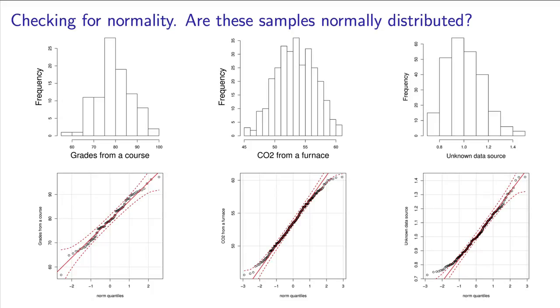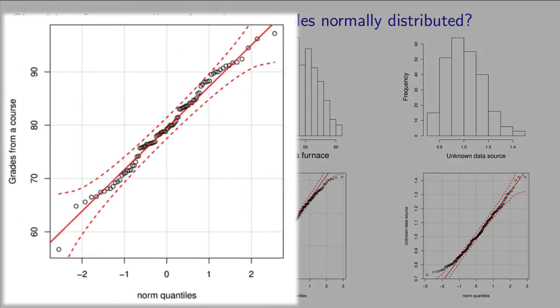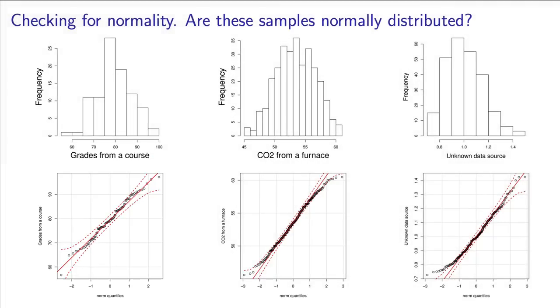So let's come back to the question we posed at the start. Which of these distributions are normal? When we look at the qqplot, it's clear the first one is. All the points lie within the bounds and are mostly close to the line.